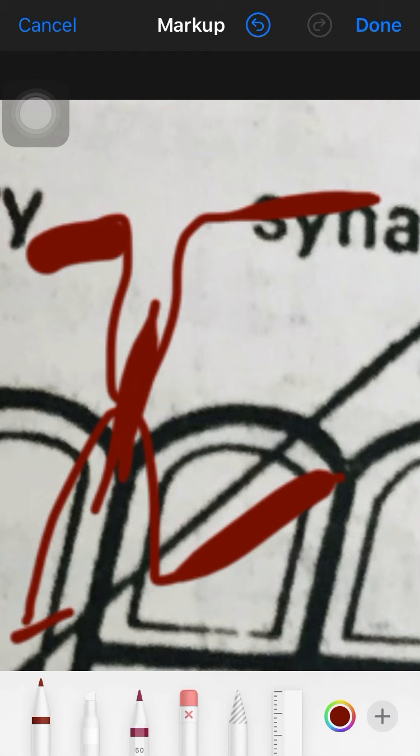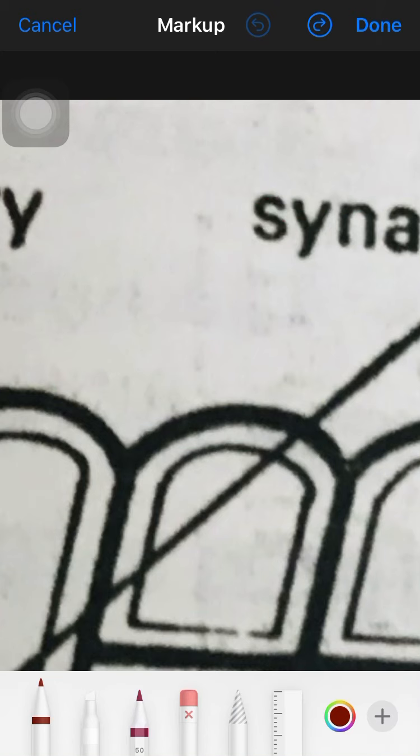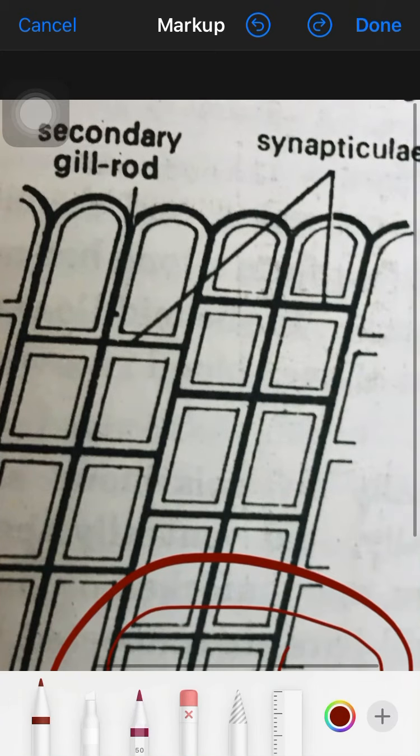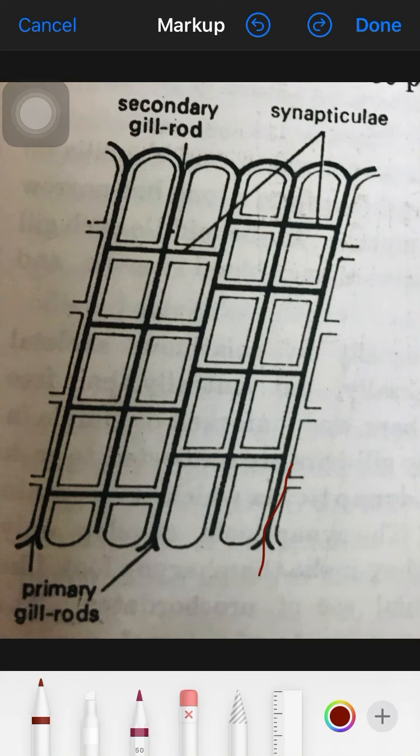The primary gill bar is formed, mainly lined by pharyngeal endoderm on the inner, anterior, and posterior sides, while lined by atrial ectoderm mainly on the outside. The core of the primary gill bar is formed of mesodermal fibrous connective tissue, blood vessels, and coelomic canal, and is supported by a rod called the primary gill rod, which is a forked skeletal element.